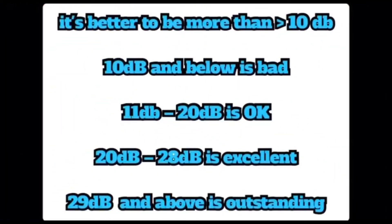For SNR margin: 11 to 20 dB is okay, and 20 to 28 dB is excellent. If the values are bad — SNR is less than 10 or 8 — you should remove all phones and fax machines and connect the modem directly to the socket.